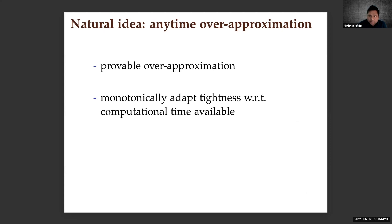To address this dichotomy, a natural idea we wanted to explore is whether we can do anytime over-approximation of forward reachable sets. The over-approximation should still be provably correct — provably safe — but we want to dynamically trade off performance in a computationally aware manner, meaning we want to monotonically adapt the tightness with respect to available computational time. If more processor time is available, the approximation should get tighter.